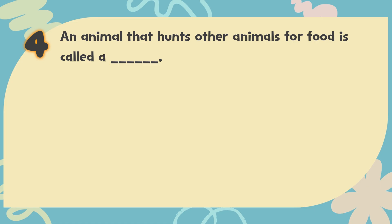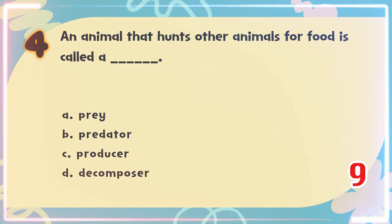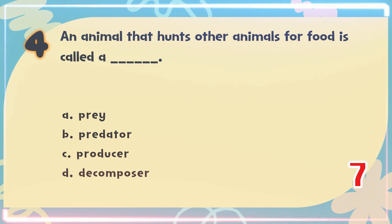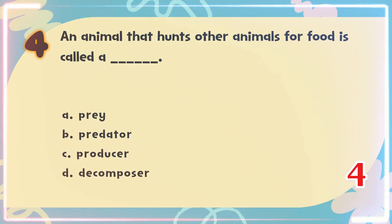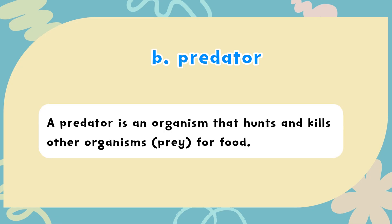Number 4. An animal that hunts other animals for food is called a blank. The choices are: A. Prey, B. Predator, C. Producer, D. Decomposer. The correct answer is B. Predator. A predator is an organism that hunts and kills other organisms' prey for food.